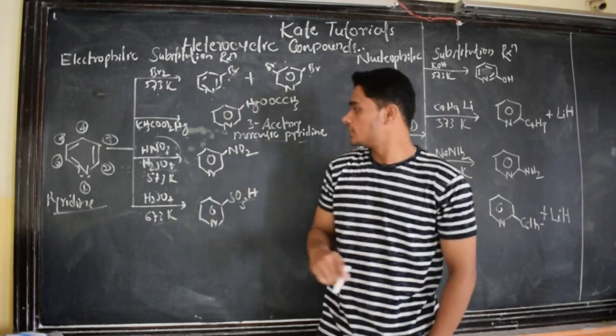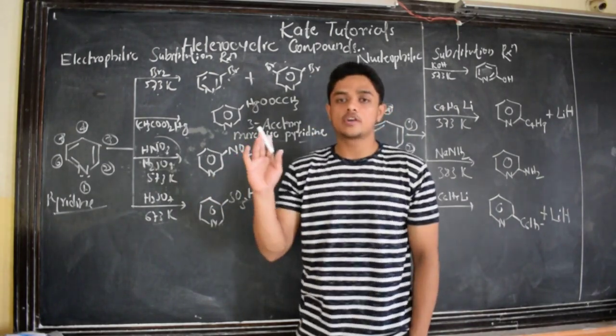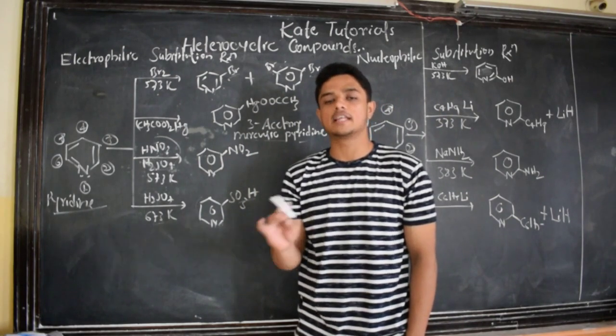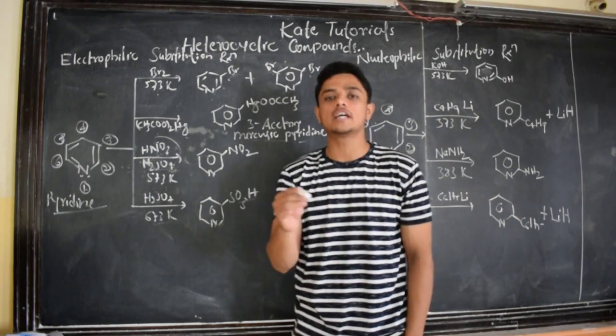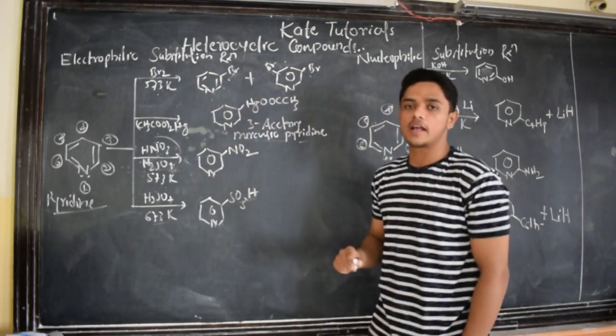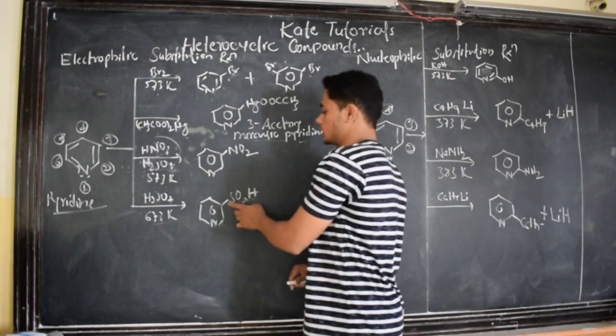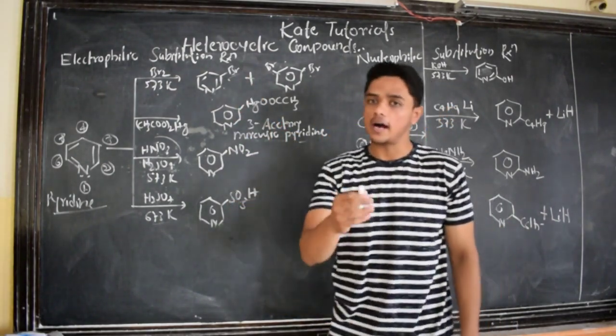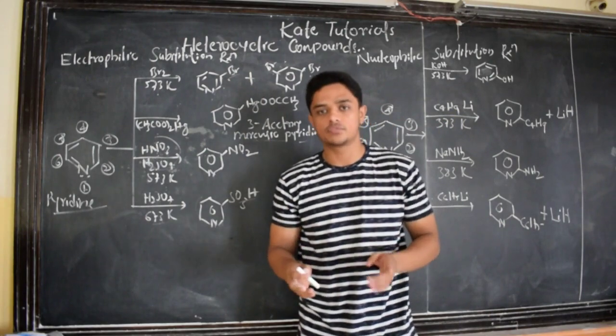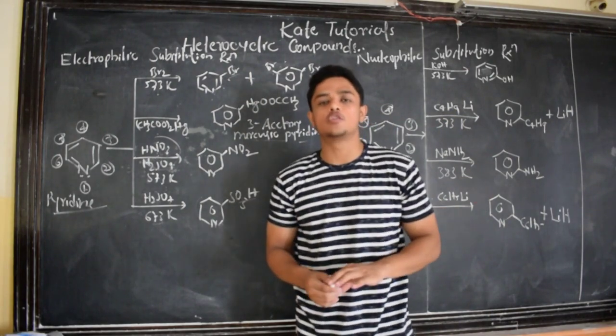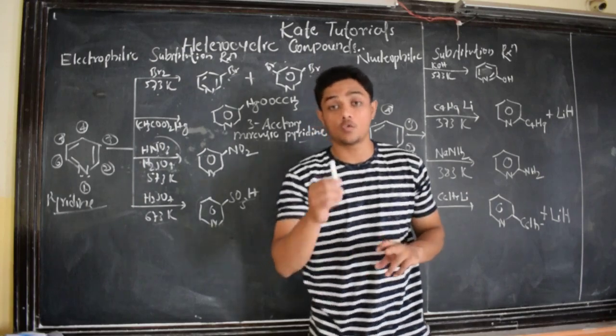Here you observe that till now we have discussed about furan, pyrrole and thiophene. There the electrophile attacks to the second position. But here we observe that electrophile will attack the third position. One, two, three. Third position the electrophile has attacked. Why this is so? The question is why this is so? That will be answered in my next video. You please watch it if you want to know.